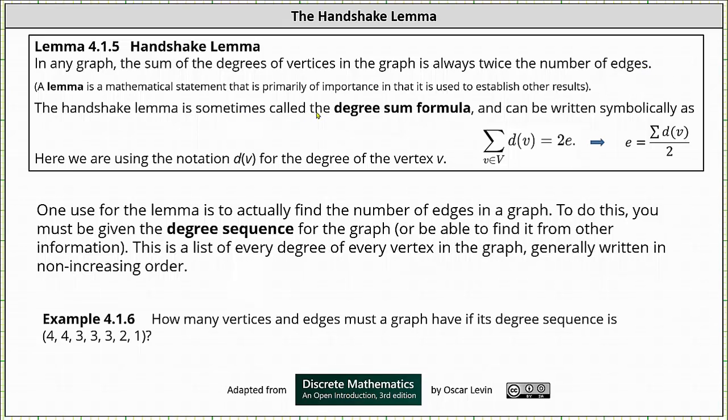The handshake lemma is sometimes called the degree sum formula and can be written symbolically as the sum of all the degrees of the vertices is equal to two times e. Here we use d(v) for the degree of the vertex v and e as the number of edges.